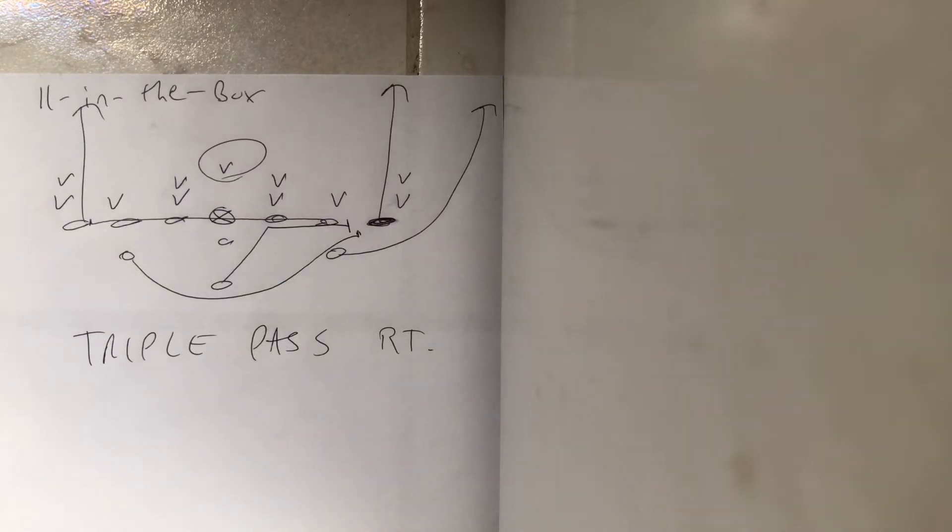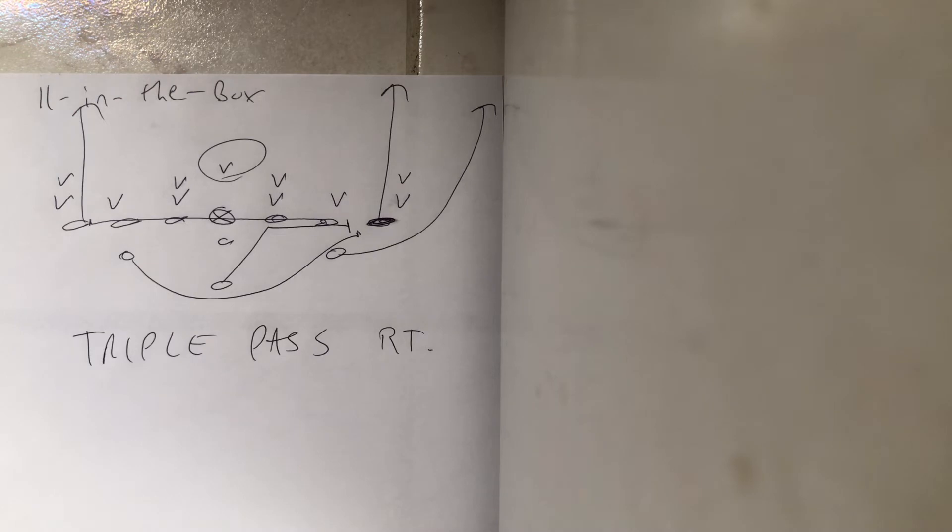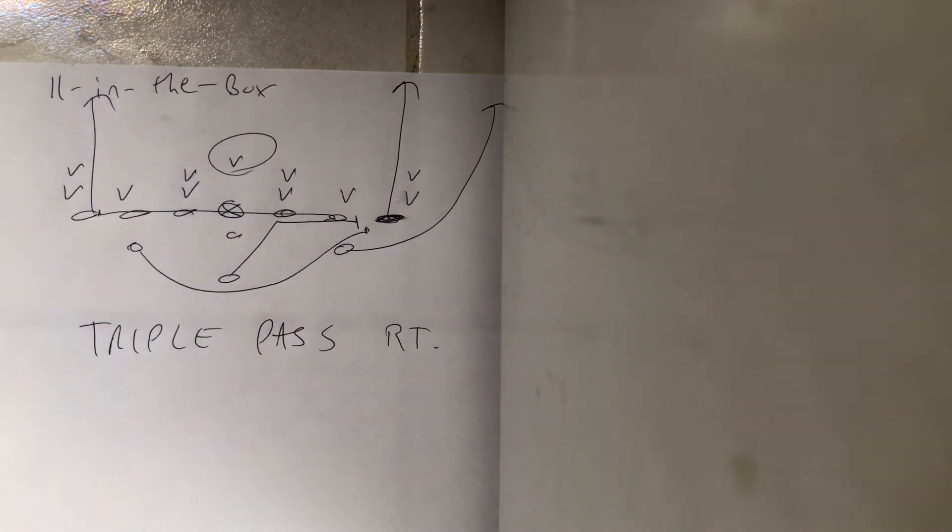Dr. Lou Sella here, and if you get 11 in the box, which means they don't give you a high safety, let's say for example they put the quote-unquote safety at five to six yards, common sense, it's time to throw the ball.